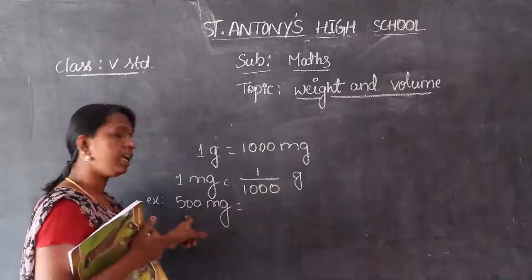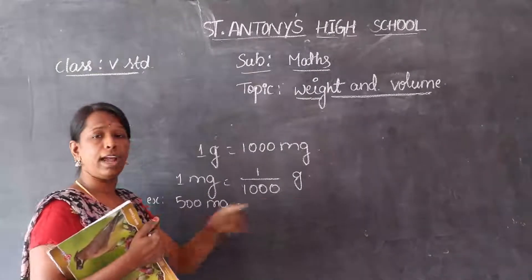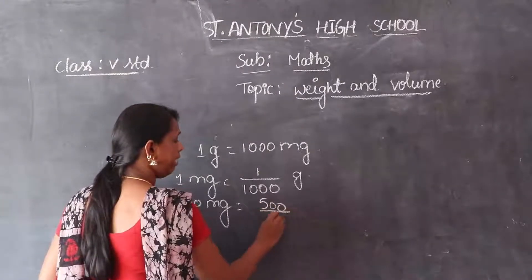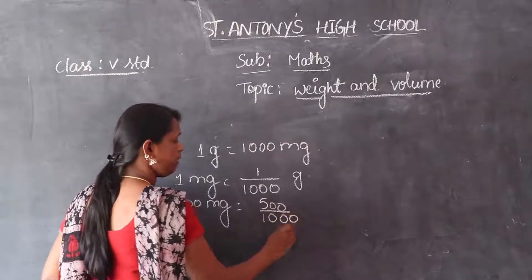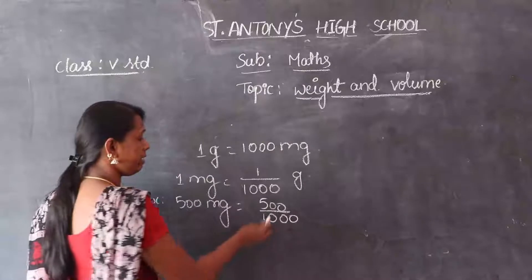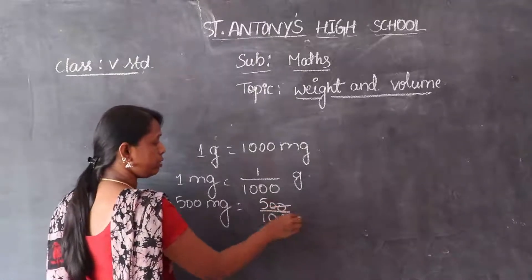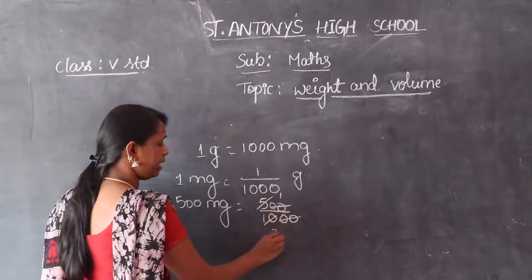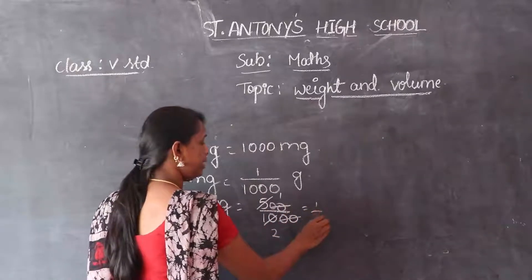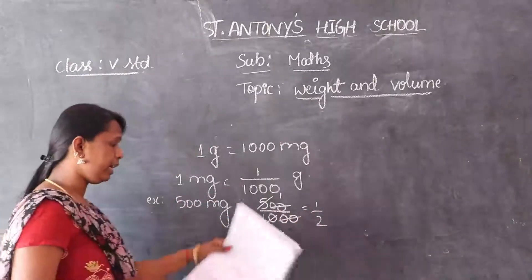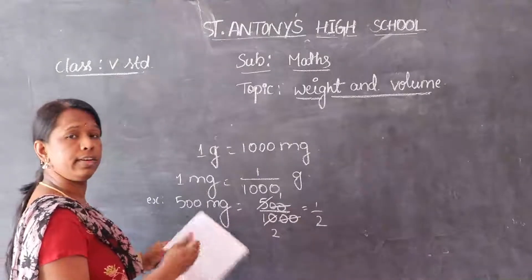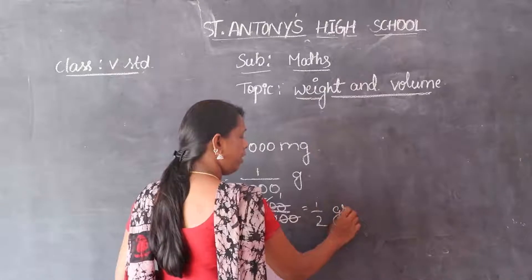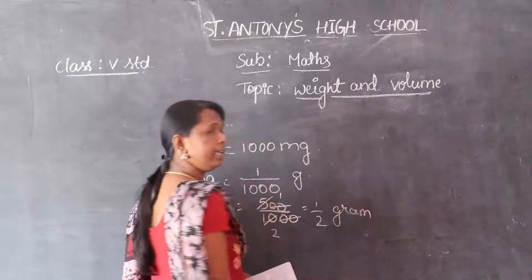Here, 500 milligrams is converted to grams. For that, write down: 500 divided by 1000. Simply, we can simplify this one. The two zeros get cancelled. 5 ones are 5, 5 twos are 10. The answer is 1/2. Then it is converted into a decimal fraction, or otherwise write it as 1/2 gram.